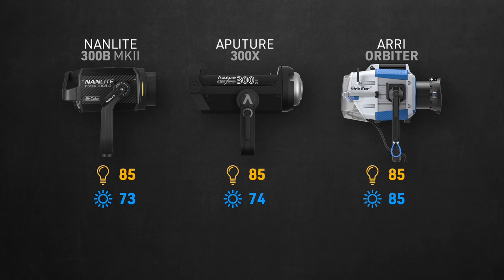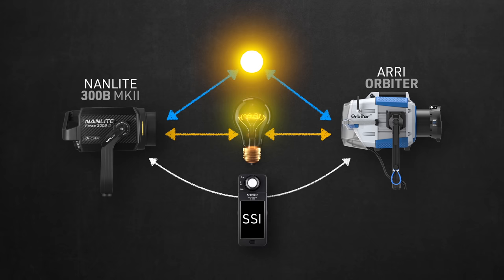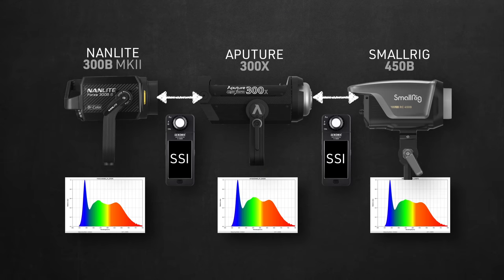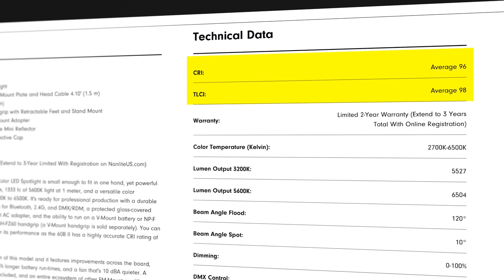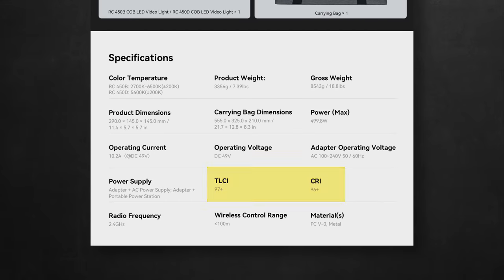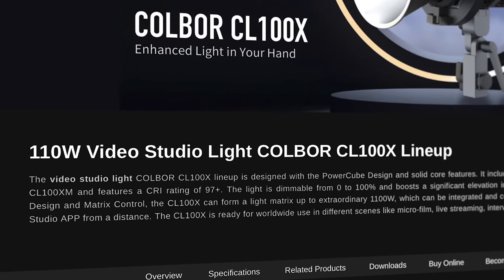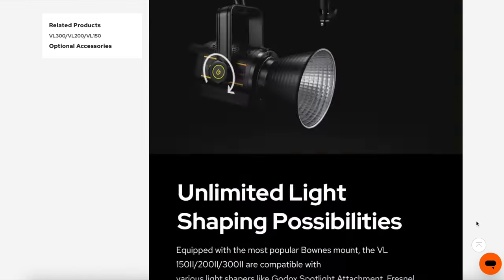SSI is a great tool to measure spectral similarity between any light and reference sources — the sun or a tungsten bulb. You can also use SSI to compare spectral similarities between two lights, which is useful when buying or renting to see how well a light matches others on set and whether you need to adjust one to match the other. I'm still not sure why most brands aren't sharing SSI scores with filmmakers. My theory is that the relatively low SSI scores, compared to the high CRI and TLCI numbers they've been showing us, make brands uncomfortable sharing them — though hopefully that will change.